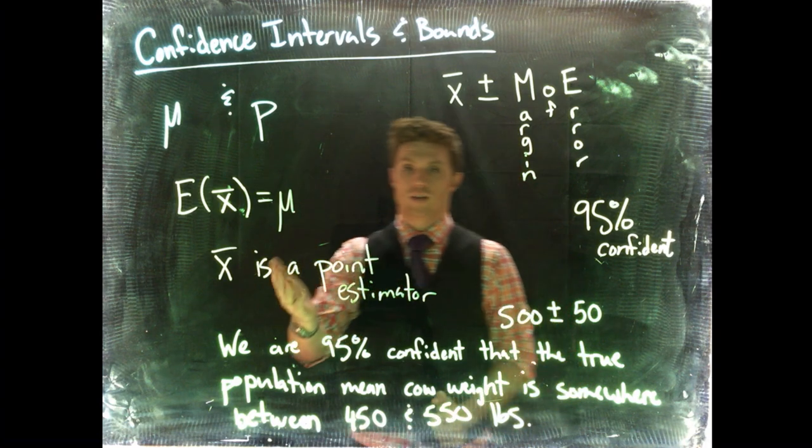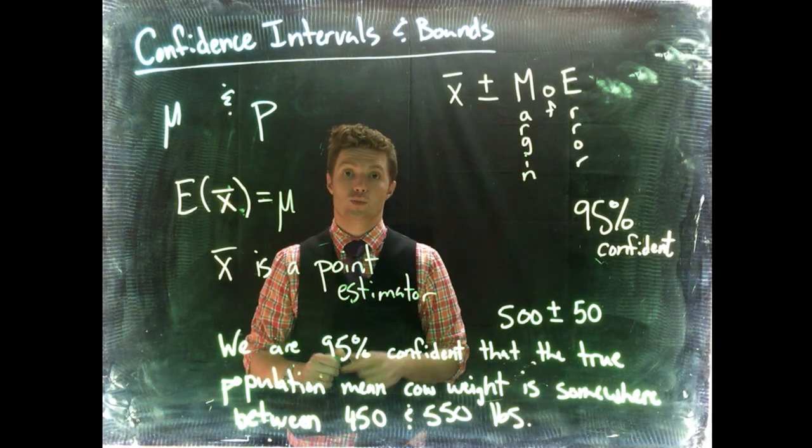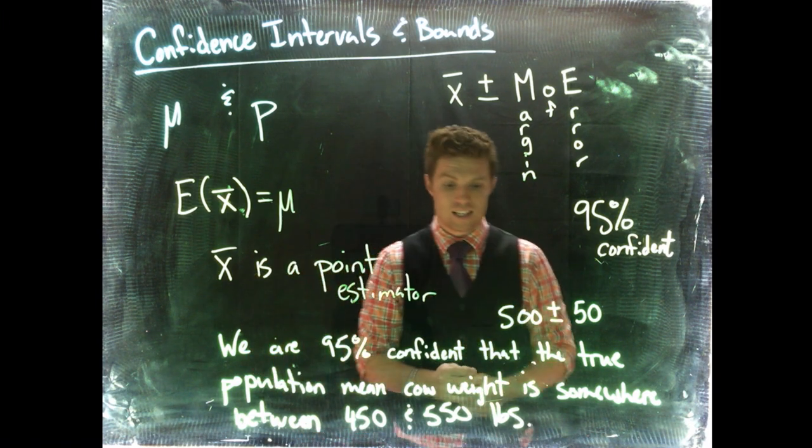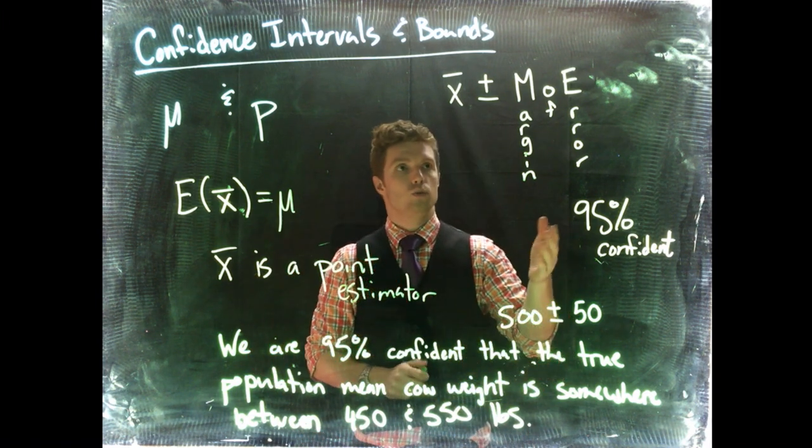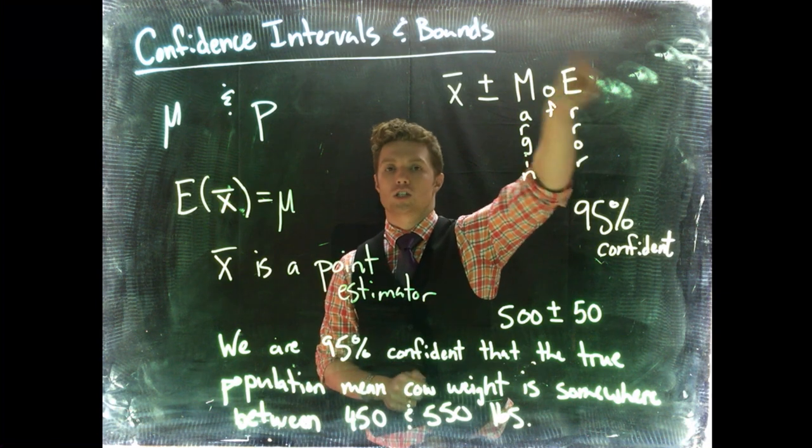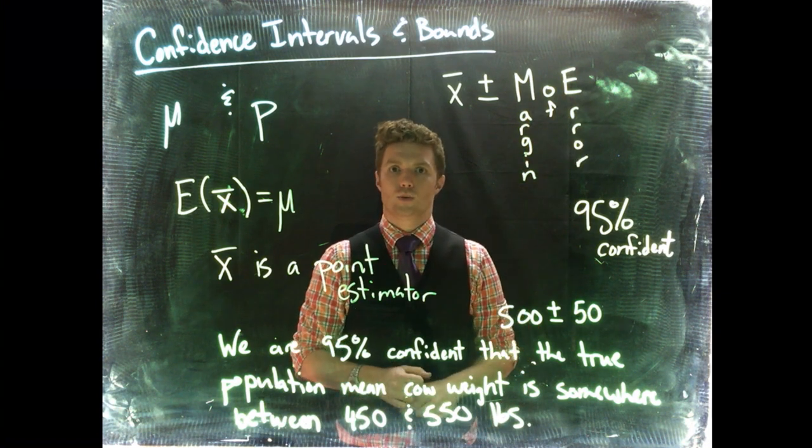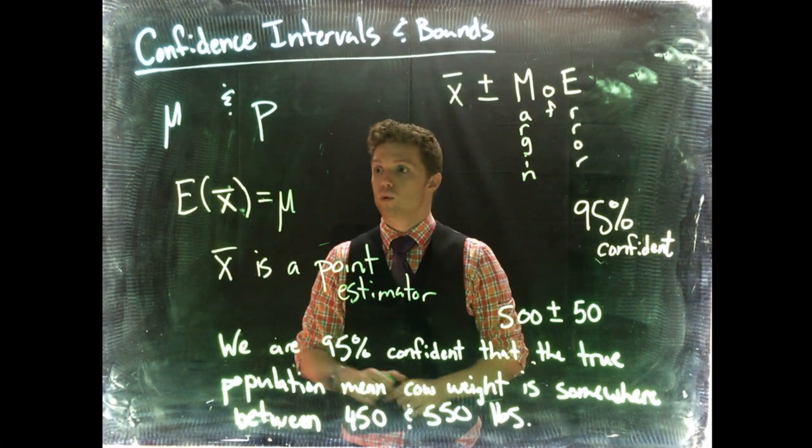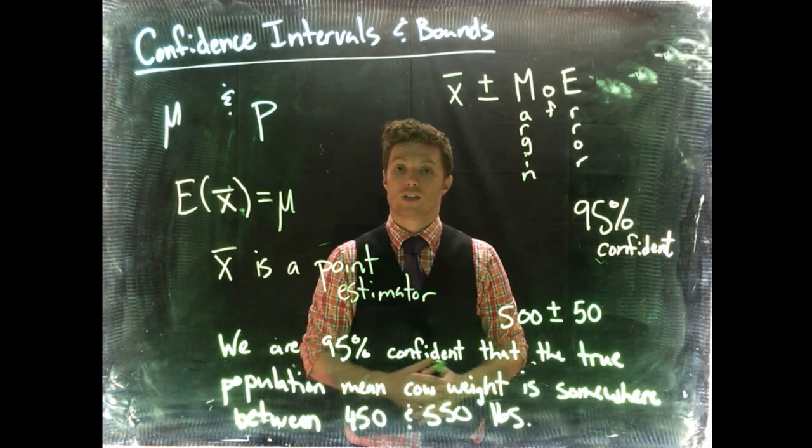So a point estimate is great, but it only gives us a single value. If we want to be confident about where the true population, either proportion or in this case mean, is, then we can calculate out this margin of error. And in our next video we'll talk a little bit about how to calculate out the margin of error when we are talking about our sample means.